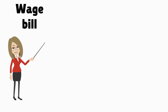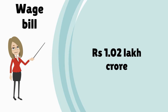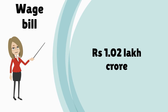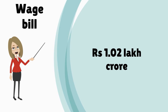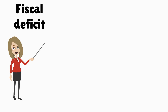The government's total wage bill could see a sharp rise in 2016-17 because of the 7th Pay Commission recommendations. Total spending on employee payouts will rise by rupees 1.02 lakh crore if the recommendations are accepted. Expenditure on pay will go up by rupees 39,100 crore, allowances would go up by rupees 29,300 crore, while revised pensions would cost rupees 33,700 crore.